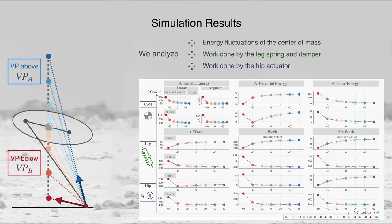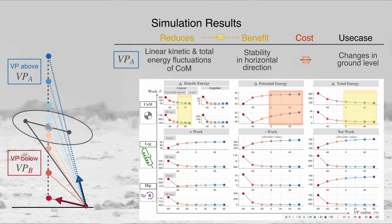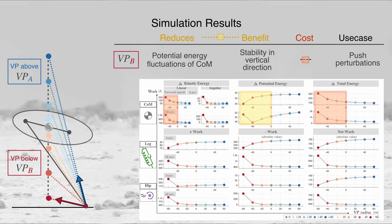Finally, we assess how our control strategies influence the energetics of locomotion. In particular, we look at the energy fluctuations of the center of mass and the work performed by the leg and hip. Our results suggest three different strategies for placing the virtual point to shape the energy distribution. A virtual point above the center of mass reduces the kinetic energy fluctuations of the center of mass, while a virtual point below reduces the potential energy fluctuations.